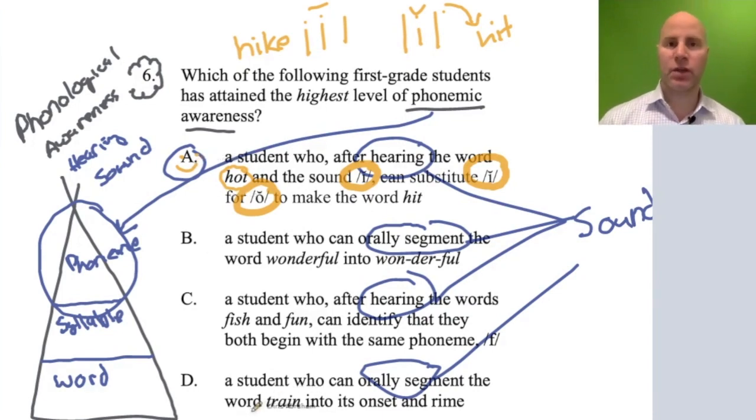Let's quickly analyze B, D, and C. B has to do with breaking up a word on a syllable level, so it's more intermediate. C has to do with fish and fun - that has to do with rhyming, which all falls under the word level, more basic foundational stuff.